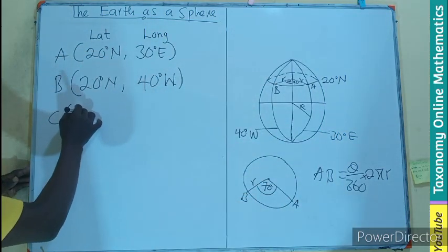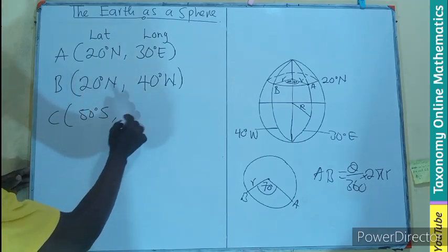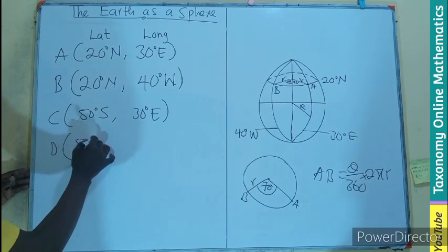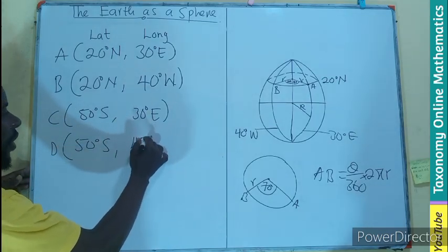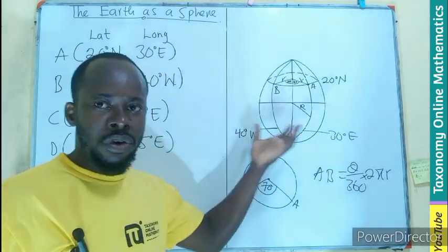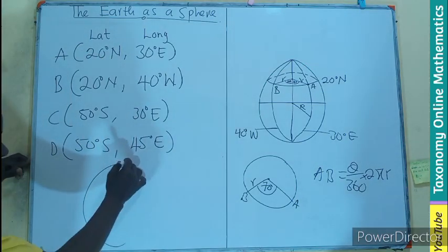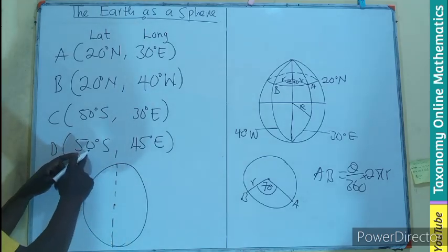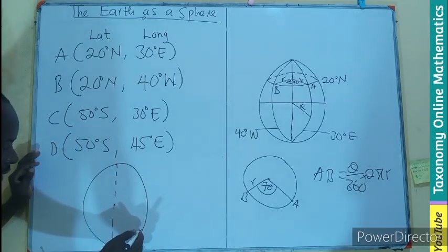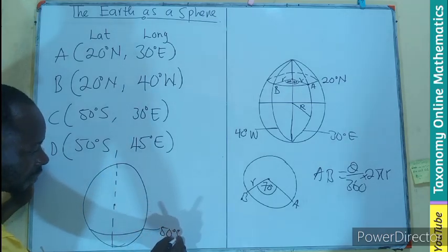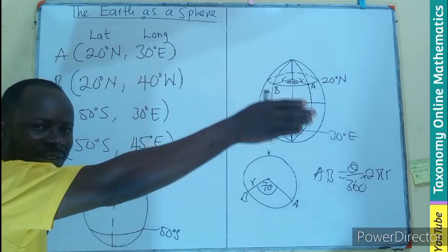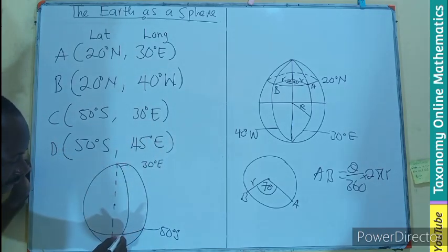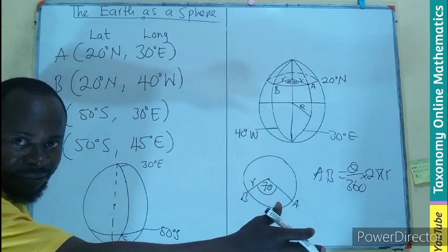This is a small circle. If it is C on 50 degrees south and 30 degrees east, and D is also on 50 degrees south and 45 degrees east, what will be the representation on the globe? So, I am going to also have the indication with this being the meridian zero. Then, I am going to locate 50 degrees south. So, it means it is towards the bottom. So, this line is going to be here, 50 degrees south.